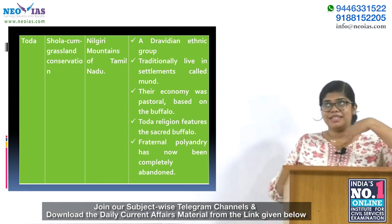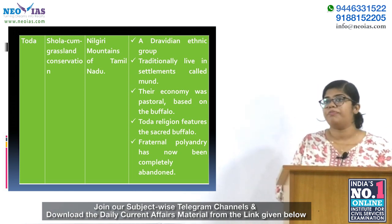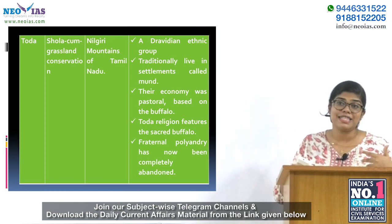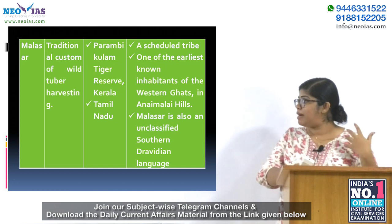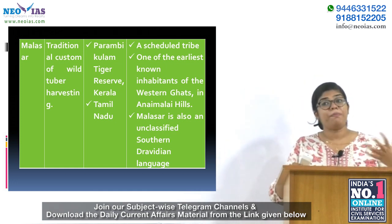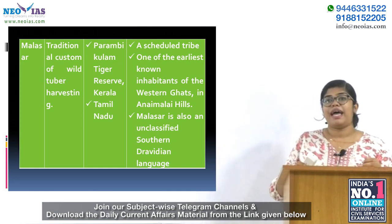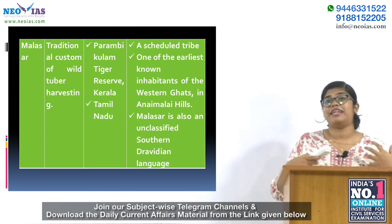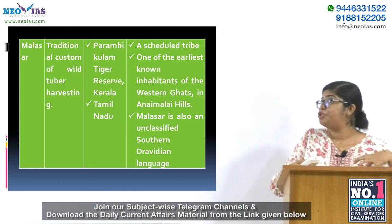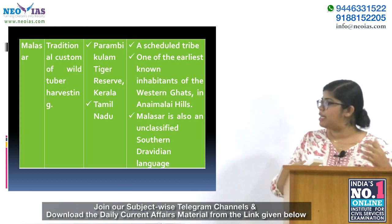The Toda live in settlements called Mund and are a Dravidian ethnic group. They practice polyandry. The Malasar tribe is from Parambikulam Tiger Reserve, which spans Kerala and Tamil Nadu. They have a traditional custom of wild tuber harvesting, are a scheduled tribe, and are found in the Annamalai hills.